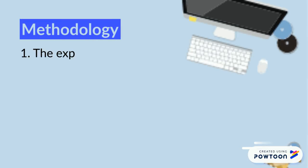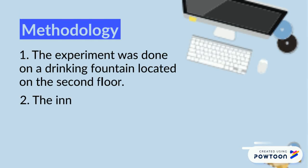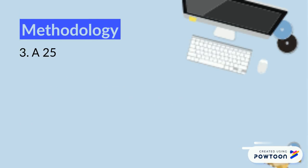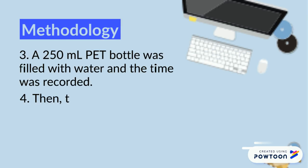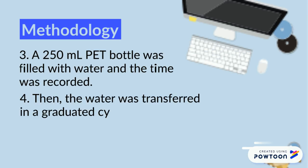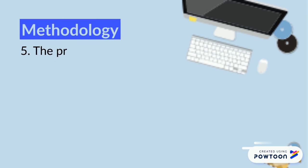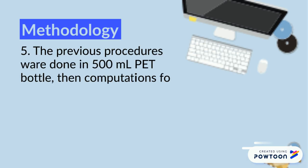The experiment was done on a drinking fountain located on the second floor. The inner diameter of the water outlet was measured using a vernier caliper. A 250ml pet bottle was filled with water and the time was recorded. Then, the water was transferred in a graduated cylinder and the volume was measured. The previous procedures were done with a 500ml pet bottle, then computations for flow rate and speed were followed.